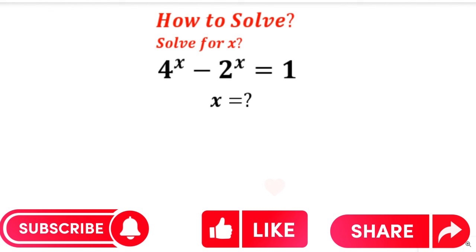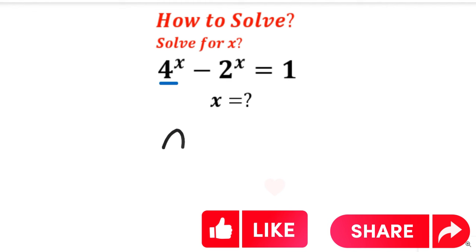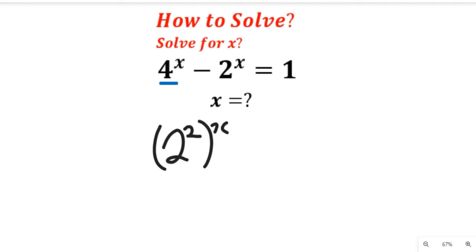Now let's solve this question. We're going to express 4 to each factor. So we'll express 4 as 2 to the power of 2, all to the power of x, minus 2 to the power of x, and that will be equal to 1.